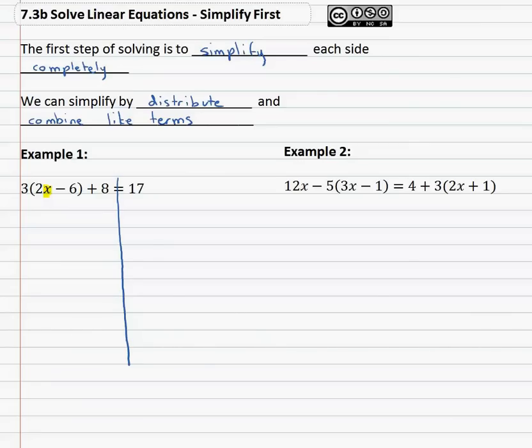On the left side, you'll notice we have a number in front of parentheses so we can distribute through. That gives us 6x minus 3 times 6 is 18 plus 8 equals 17. We can actually do a little more simplifying because we can combine the like terms of the negative 18 and the positive 8. So now we have 6x minus 10 equals 17.